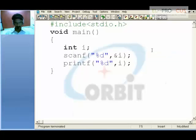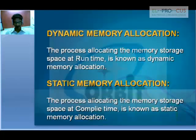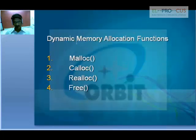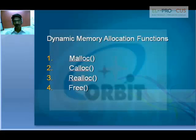DMA is a concept in which we have four functions: malloc, calloc, realloc, and free. We will be seeing all these four functions one after the other.